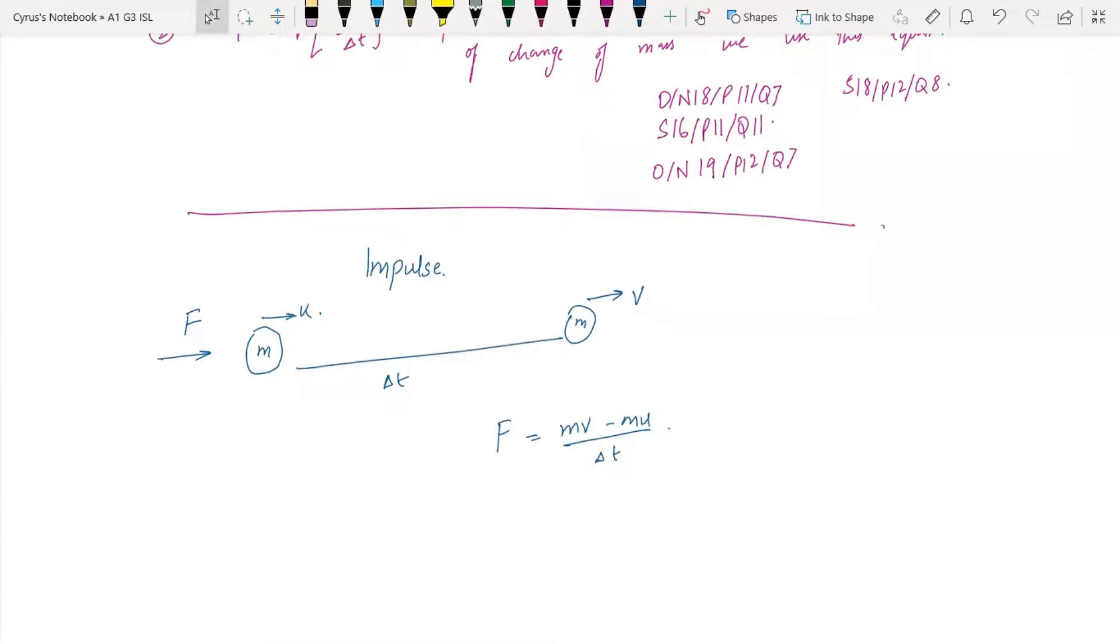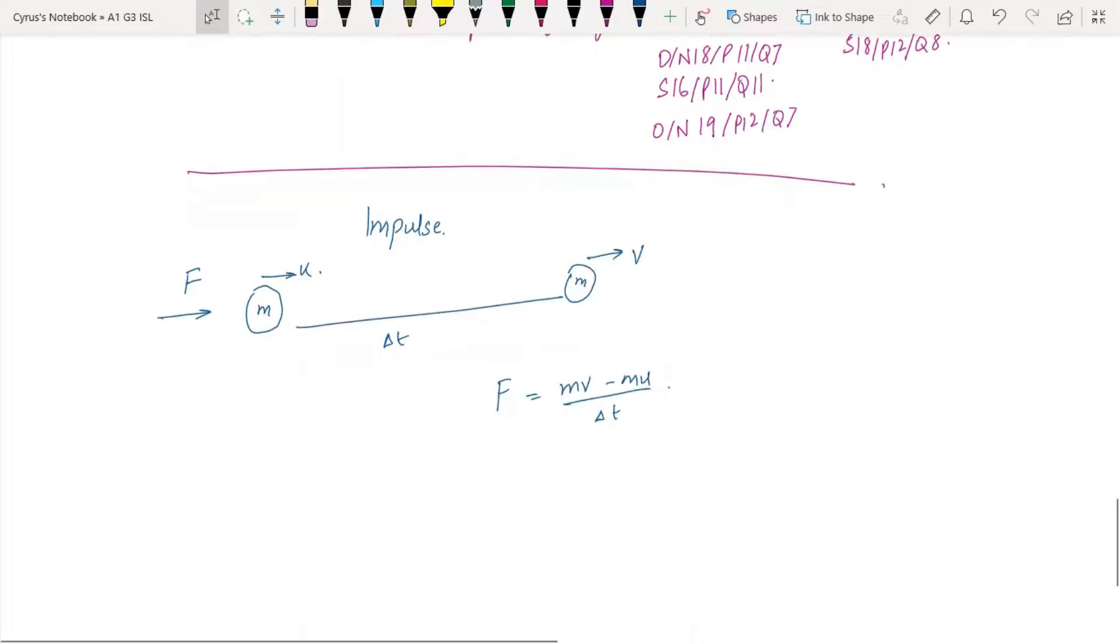We have F is equal to MV minus MU over delta T. If I multiply this delta T here, if this goes here, this MV minus MU is what? This is a change in momentum.